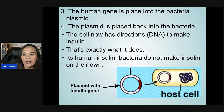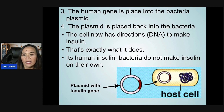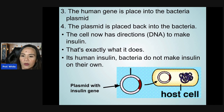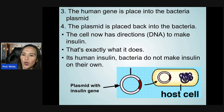The plasmid is placed back into the bacteria, and the cell now has the DNA sequence — the directions — to make insulin. It then produces human insulin.